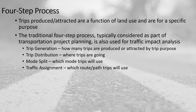And then traffic assignment — a combination of the prior steps — addresses what specific route or path those trips will use. That's mode-specific and direction-specific based on trip distribution, and accounts for how many trips are actually generated. This summarizes the four-step process that is heavily used within the TIA process.